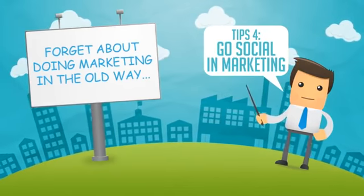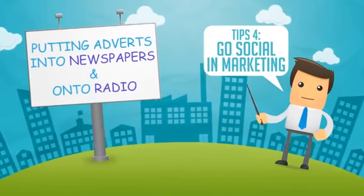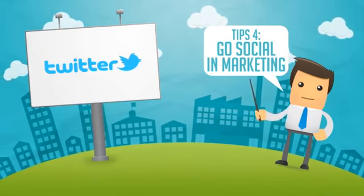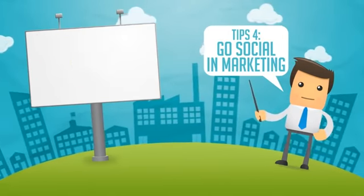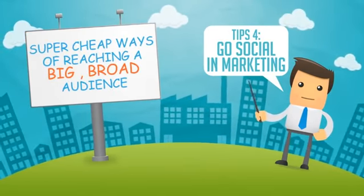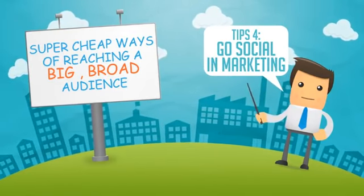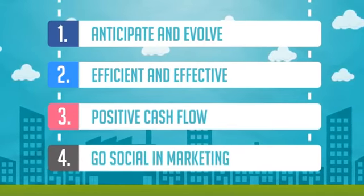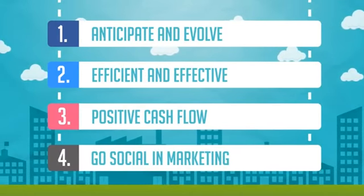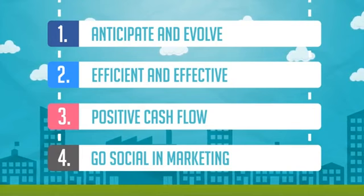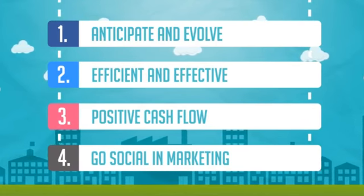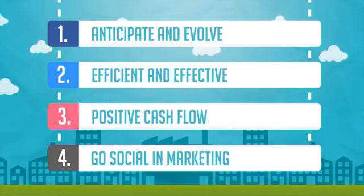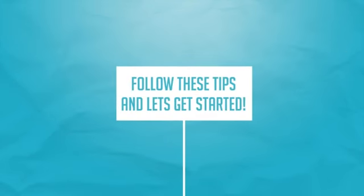Tip number four: go social in marketing. Forget about doing marketing the old way — putting adverts into newspapers and onto radio, which is very costly. Twitter, Facebook, and email are super cheap ways of reaching a big, broad audience. Let's recap: number one, anticipate and evolve; number two, efficient and effective; number three, positive cash flow; and finally, go social in marketing.